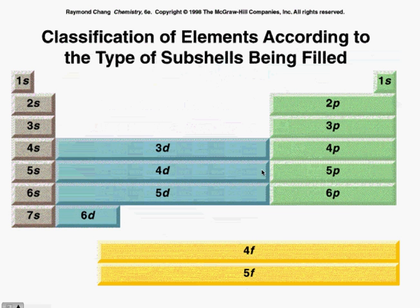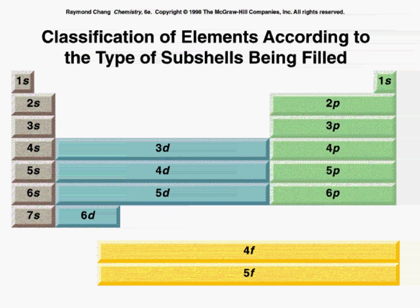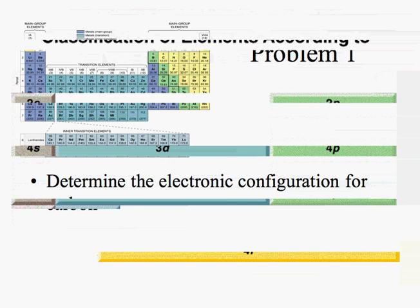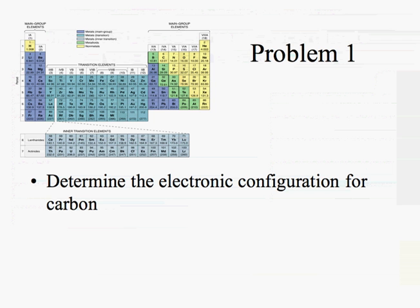This is important for you to know and recognize because when it comes to writing the electronic configuration of an atom, you really need to be sure of it — what's a P orbital, what elements have P orbitals, what elements have S, D, and F. With that said, the way that I teach this is I use what I call 'count the boxes.'